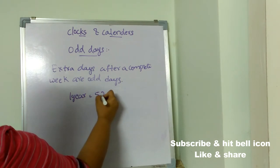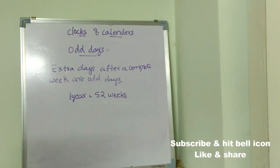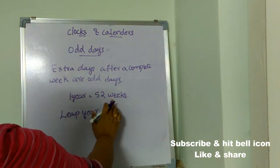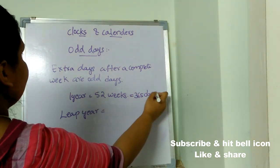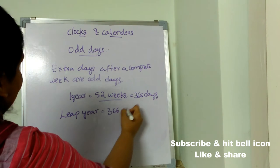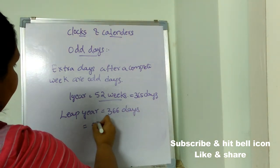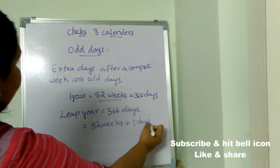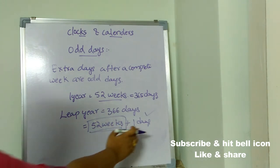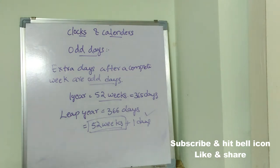In one year there will be 52 weeks. A normal year has 365 days, which is 52 weeks. But a leap year has 366 days, which is 52 weeks plus one extra day. This extra day is called an odd day — after counting the complete weeks, whatever additional days remain are called odd days.